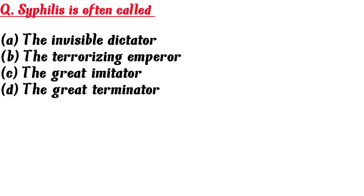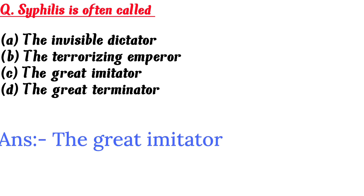Syphilis is often called: A. The invisible dictator, B. The terrorizing emperor, C. The great imitator, D. The great terminator. Answer is C. The great imitator.